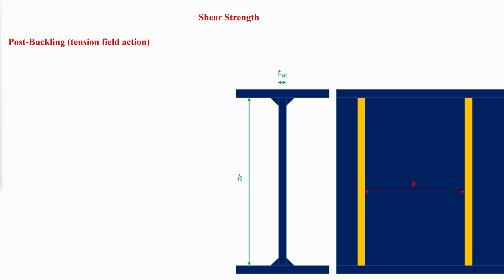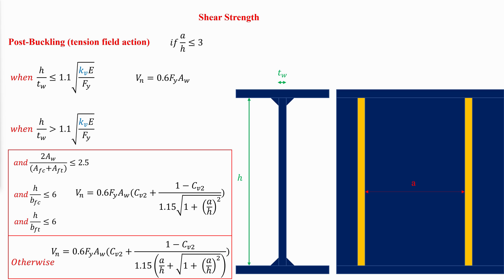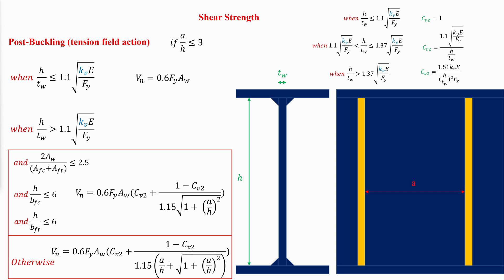Tension field action may be considered in interior panels when a/h is less than or equal to 3. If the height-to-thickness ratio of the web does not exceed a certain limit, then the shear strength is computed accordingly. However, if it does, there are two possibilities. If 2 times the area of the web divided by the sum of the area of both flanges does not exceed 2.5, and if the web height-to-flange width ratios of both flanges do not exceed 6, then the shear strength follows one formula; otherwise, it is determined by another. The constant C sub V2 depends on the depth-to-thickness ratio of the web.